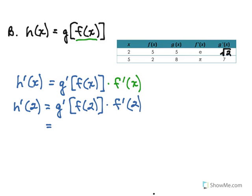Starting on the inside: f of 2, which from the table is 5. So the next step requires g prime of 5. And f prime of 2 from the table is e. Going back to the table, g prime of 5 is 7. So we have 7 times e as our answer for this second problem.